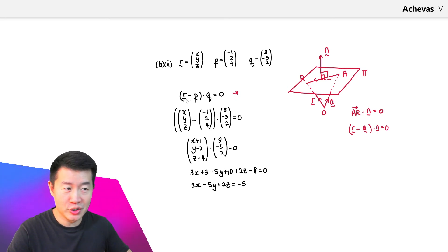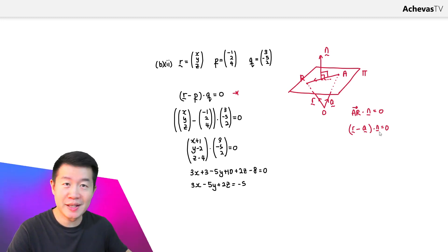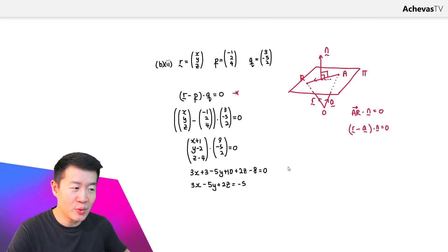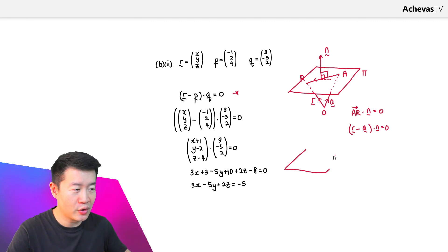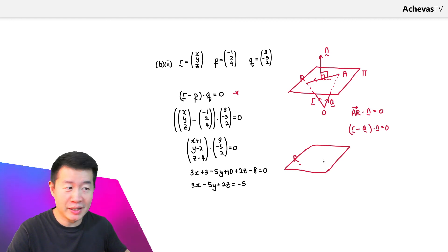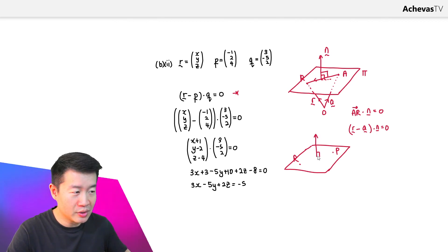We can see this here: a variable position vector r, a fixed point with position vector p, and q which is synchronized to the normal vector n. Looking at this equation, we can deduce that it represents the position vector of a variable point R lying on a plane that passes through the point P and is perpendicular to the vector q, where q is (3, -5, 2).